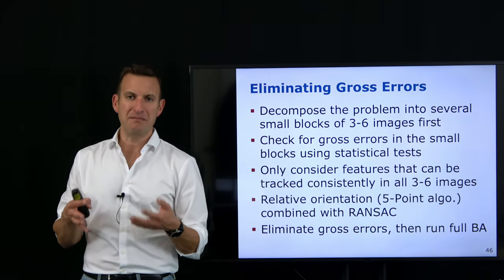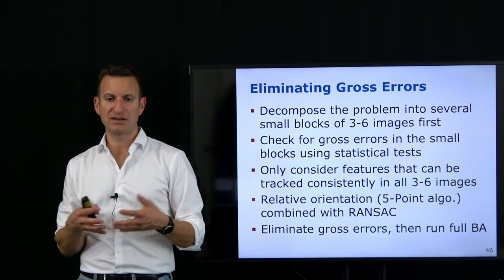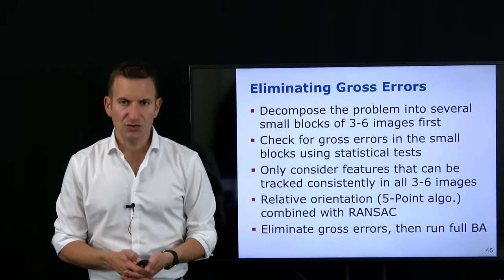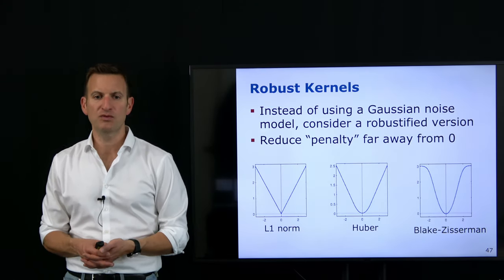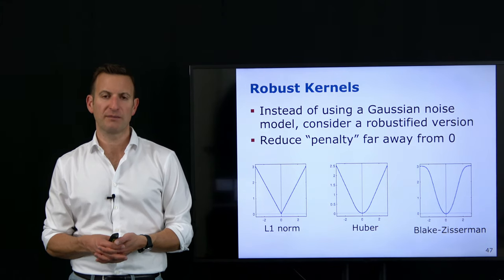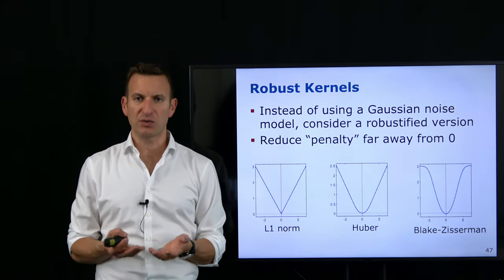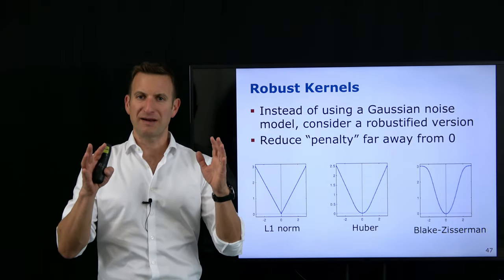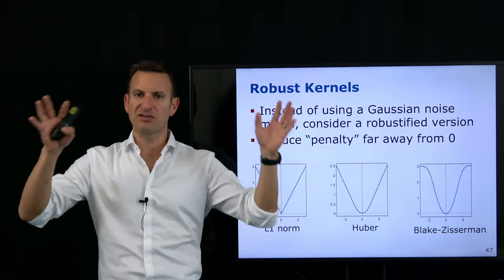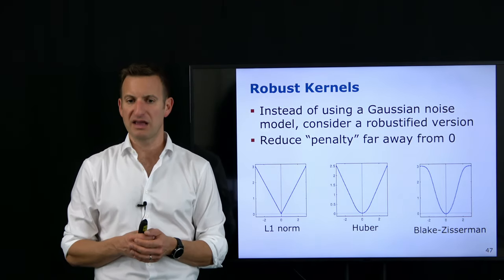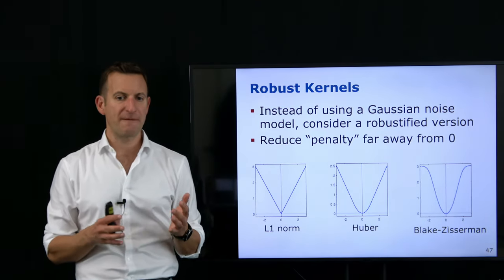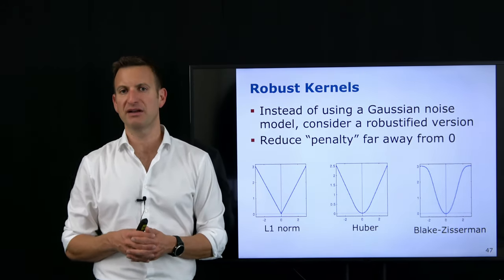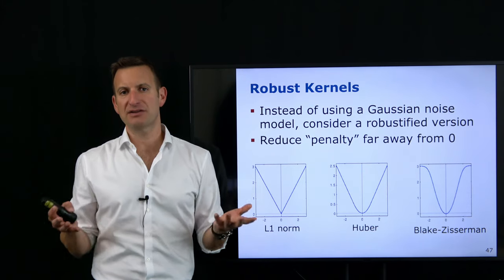Something else you should do in your optimization process is move towards so-called robust kernels. Typically in our least squares approach we assume everything is Gaussian, or we identify and eliminate outliers so the remaining part is Gaussian. This is valid if we can really eliminate all outliers, but we cannot guarantee that. So we can use a different function than a quadratic function as the error kernel to reduce the effect that outliers can have on the overall solution.